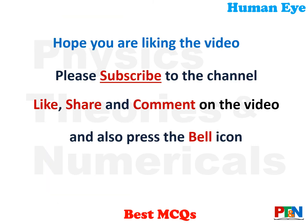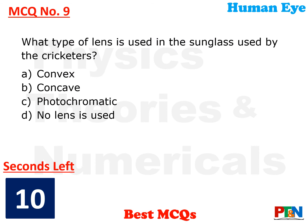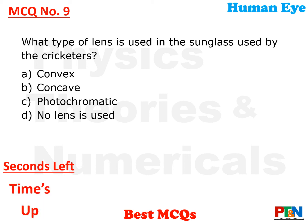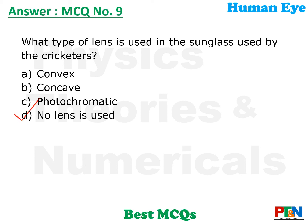Hope you are liking this video. Please subscribe to the channel, like, share and comment on the video, and press the bell icon. Next MCQ: what type of lens is used in the sunglasses used by cricketers? Convex, concave, photochromatic, or no lens is used? 10 seconds time. The answer is: no lens is used. A lens is used only if somebody has a defect in their vision. Sunglasses are only for protection of the eyes and do not need to bend the rays, so they are basically plain glass.